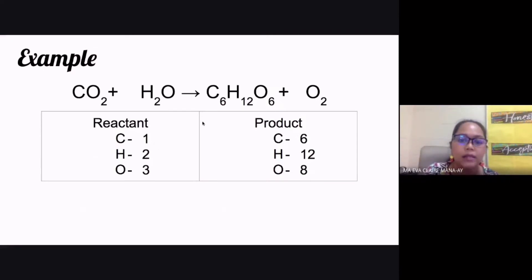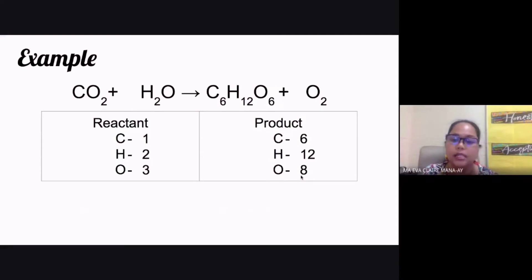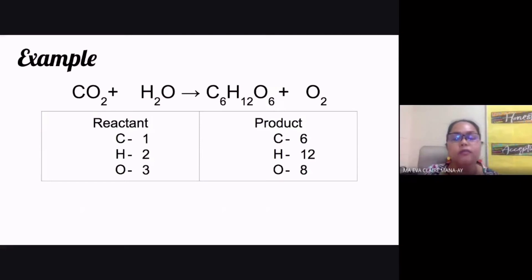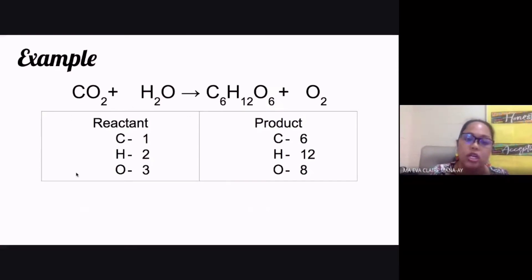Clearly the chemical equation is not balanced. The reactant side has one carbon versus six on the product side, two hydrogen versus twelve, and three oxygen versus eight. The law of conservation of mass states matter is not destroyed nor created, so we always need to balance our chemical equation.